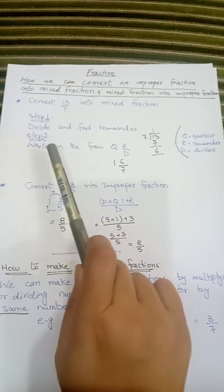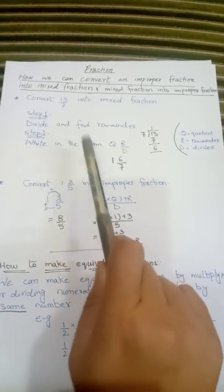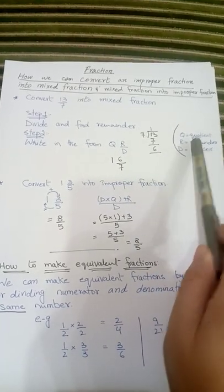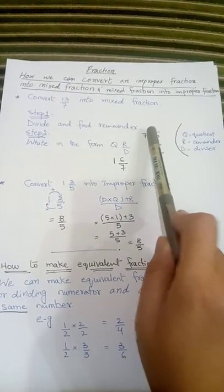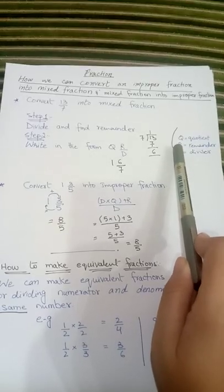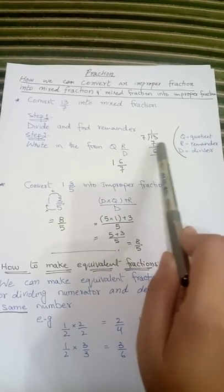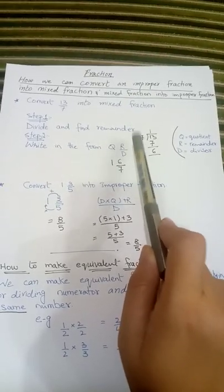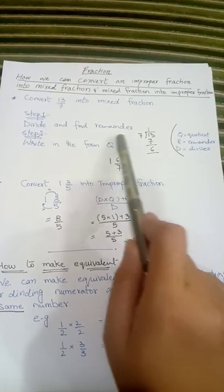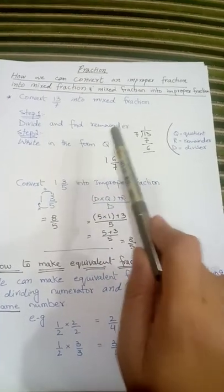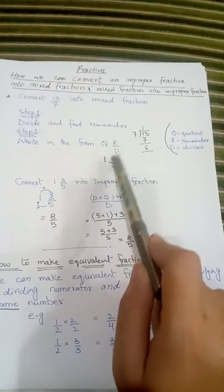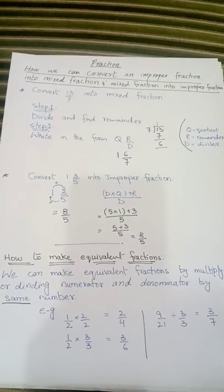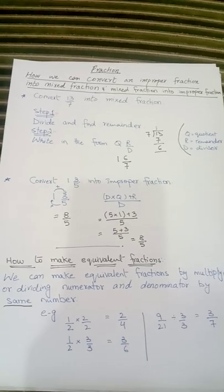The next step is to write in the form Q remainder upon D. Q is the quotient, which is 1. R is the remainder, which is 6. D is the divisor, which is 7. So we write it as 1 and 6 upon 7. This is how we can convert an improper fraction into a mixed fraction.